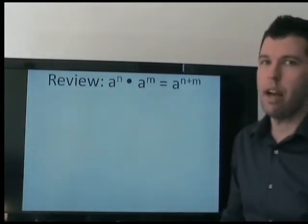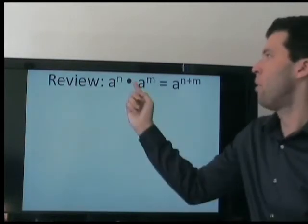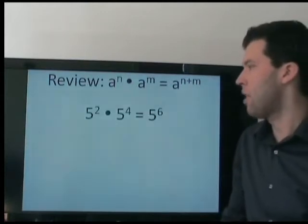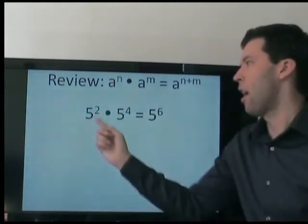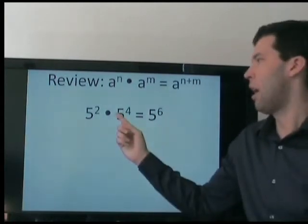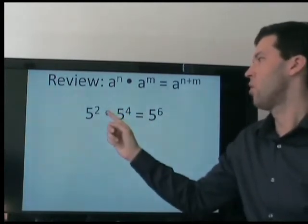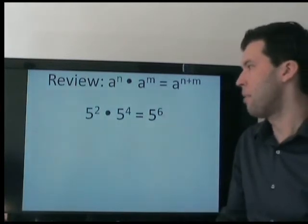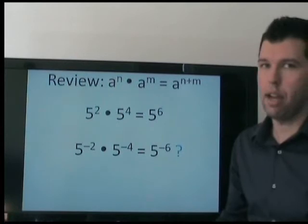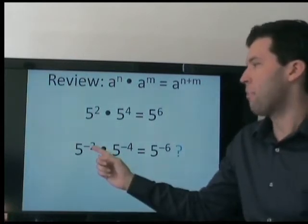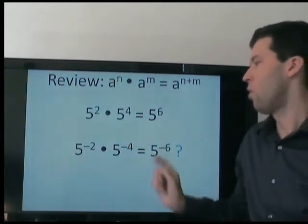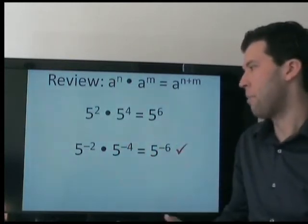Hopefully you learned with positive exponents that when we multiply powers with the same base, we add their exponents. This should be very obvious: here, we are multiplying by 5 two times, and multiplying by 5 four times — so total, we are multiplying by 5 six times. Is that true for negative exponents? Yes. We are dividing by 5 two times, and we are dividing by 5 four times, so total we are dividing by 5 six times.